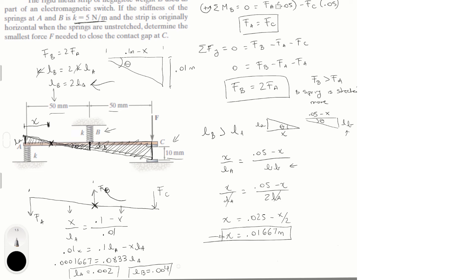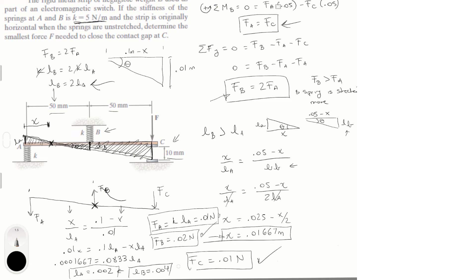FA equals K times LA equals 5 times 0.002 equals 0.01 Newtons. The spring stiffness was given as 5 N/m at the beginning of the problem. FB equals twice FA, which is 0.02 Newtons. And FC equals FA, which is 0.01 Newtons. Those are the final answers for the forces and spring lengths.